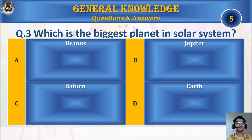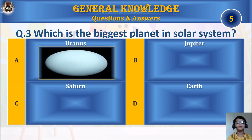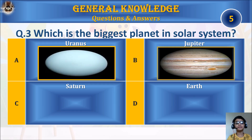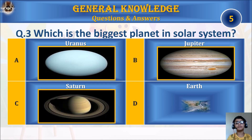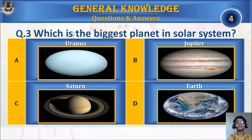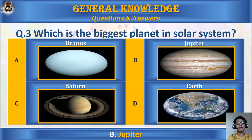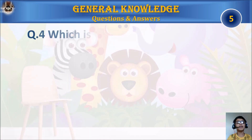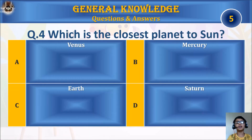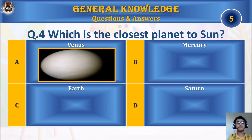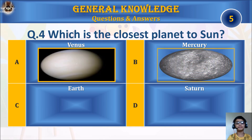Question 3: Which is the biggest planet in the solar system? A. Uranus, B. Jupiter, C. Saturn, or D. Earth? Your time starts. The answer is B. Jupiter.